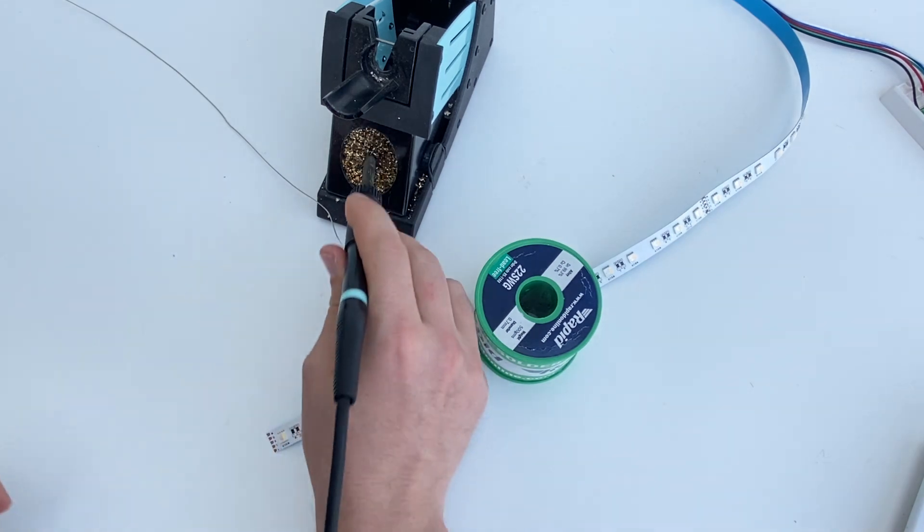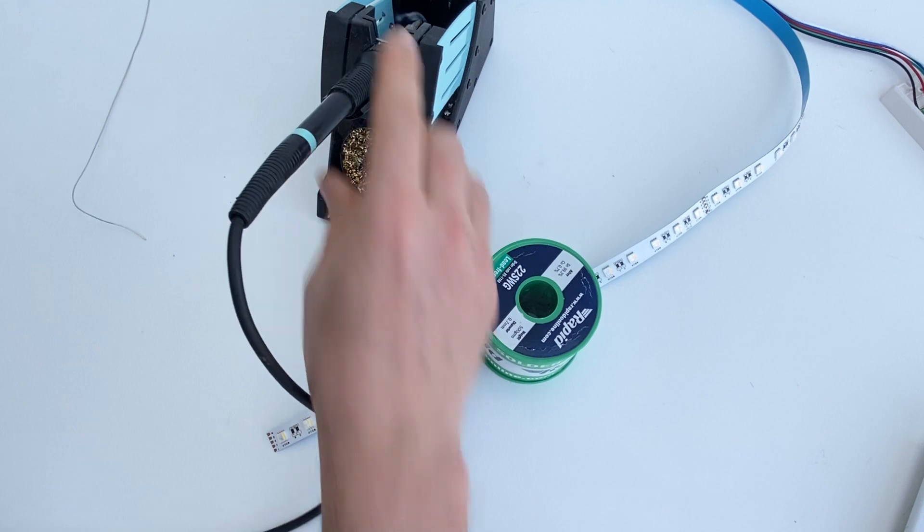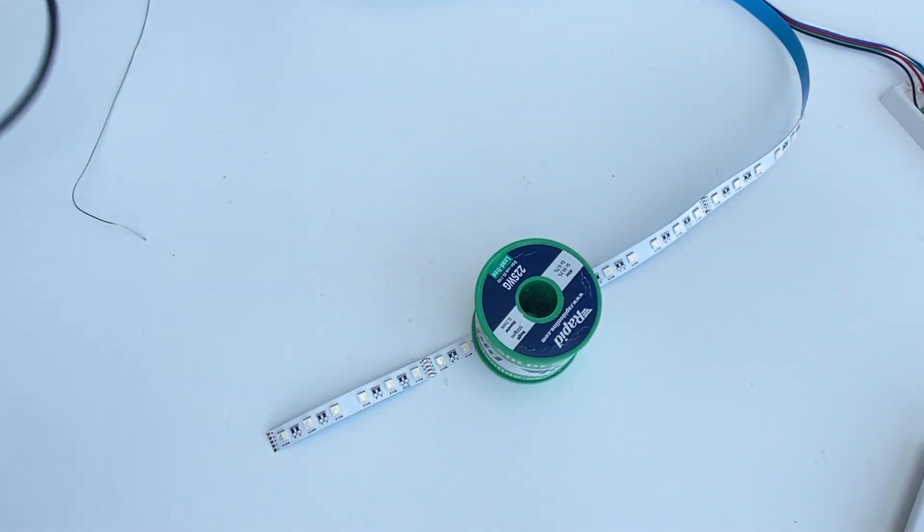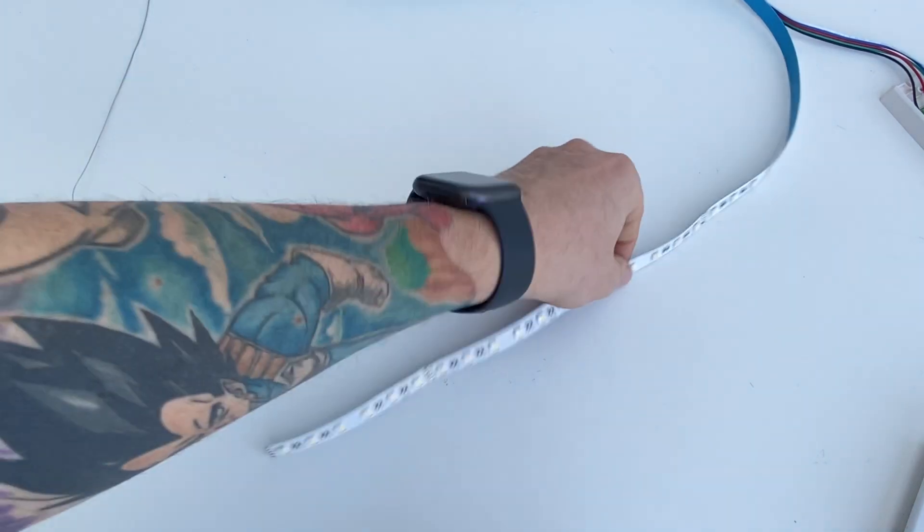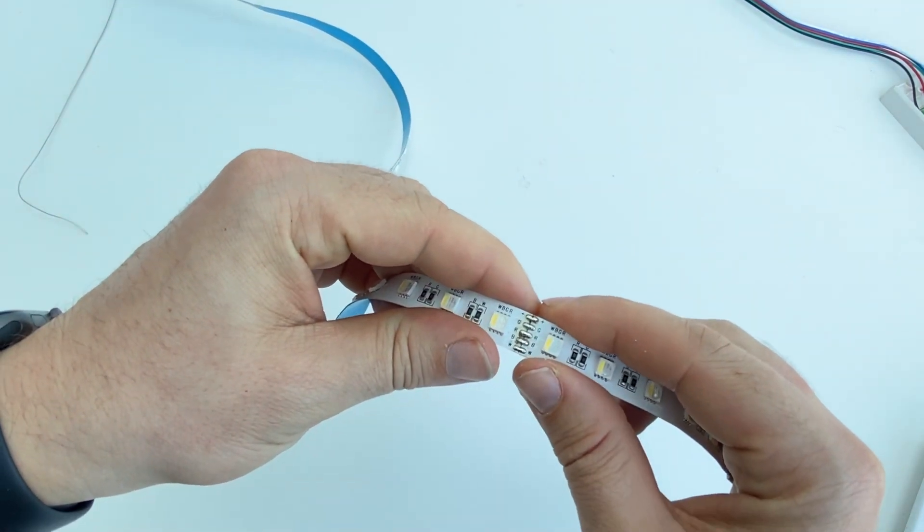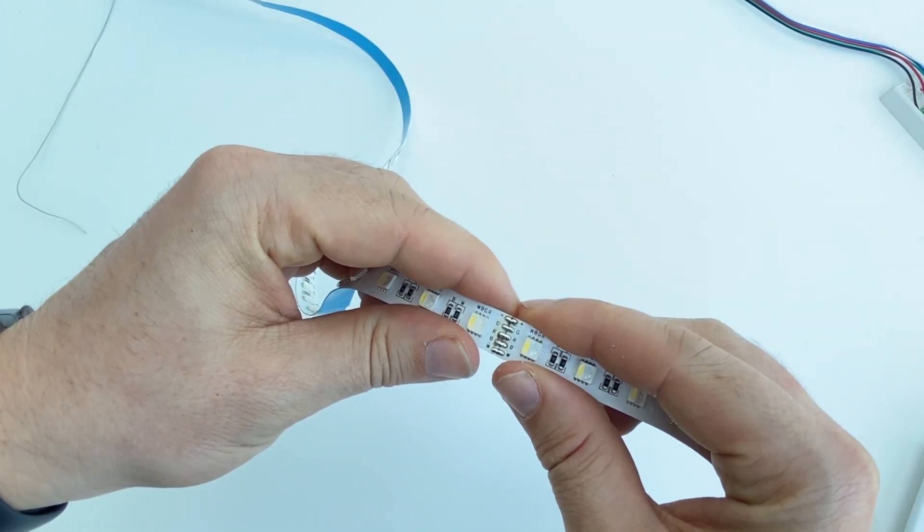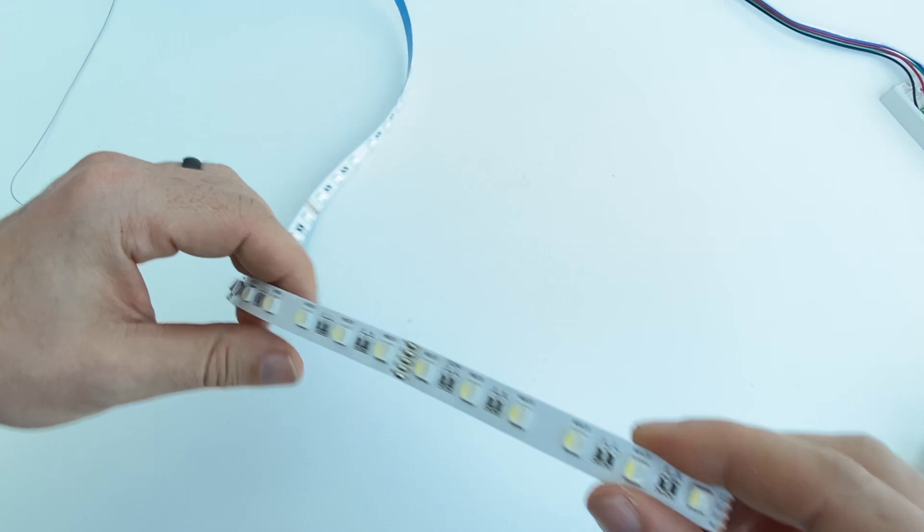Okay, and I'll just add a drop of solder on the end, put it back, and we just check the connections are nice and solid. So now we've got nice solder joints there, nice solder joints there.